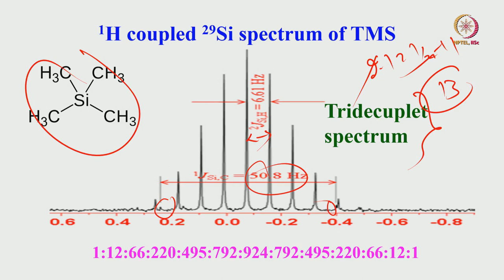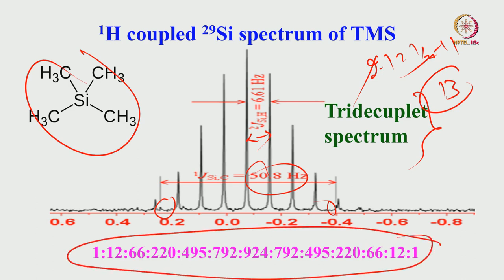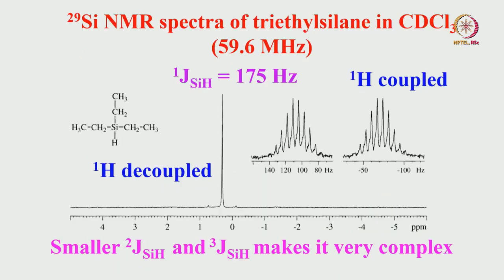How do you arrive at the intensity pattern of the 13 peaks? You go to Pascal's triangle. For 12 equivalent protons coupled, you know for 2 protons the pattern is 1:2:1, for 3 protons 1:3:3:1, and so on up to 12. The last highest intensity peak is 924, compared to which the outer peak is only about 1 percent intensity — that is why we are not seeing it. This is the proton-coupled TMS silicon spectrum.